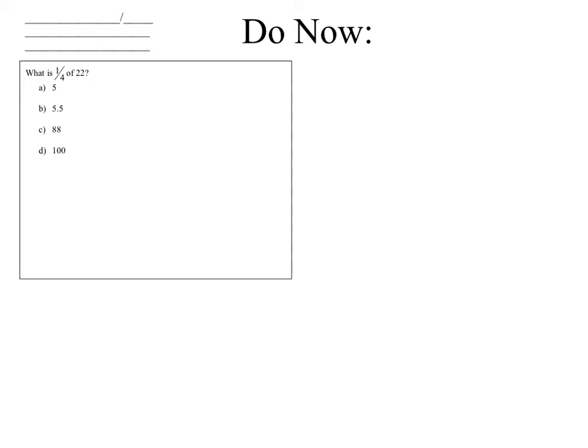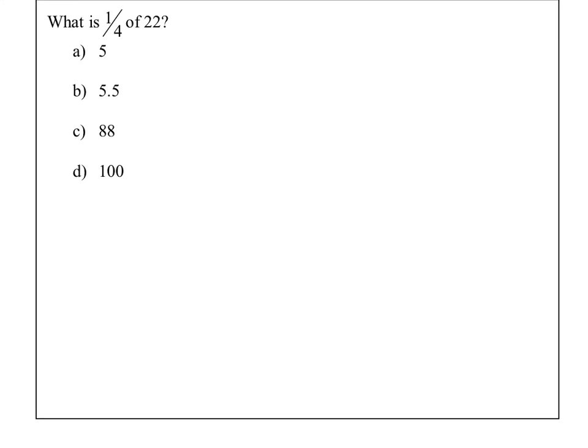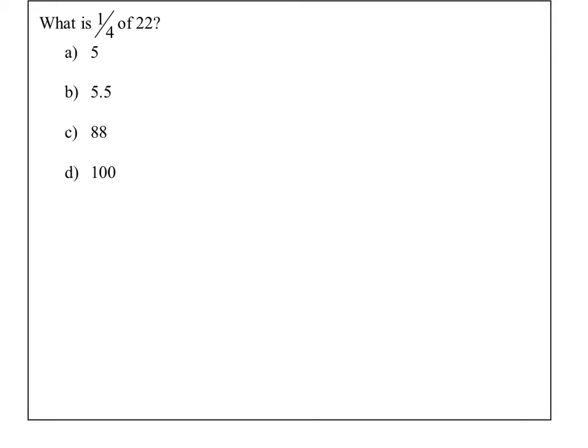Alright, we're starting today with our do now. Our do now asks us: what is one-fourth of 22? One-fourth of 22 — what we should remember from a long time ago is that if we want to know what one-fourth of 22 is, then we need to multiply. The word 'of' often is an indicator in math of multiplication, which should remind us that this would be one-fourth times 22.